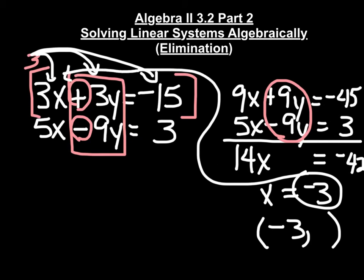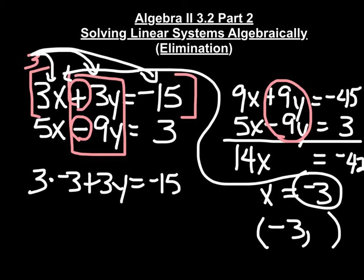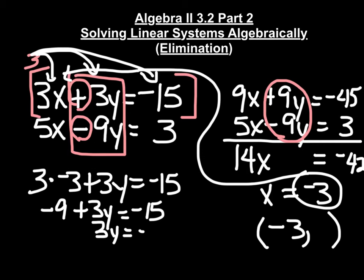So I'm going to say: 3 times x, which is negative 3, plus 3y equals negative 15. That gives us 3 times negative 3 is negative 9, plus 3y equals negative 15. We'll add 9 to both sides and get 3y equals negative 6, so y equals negative 2.